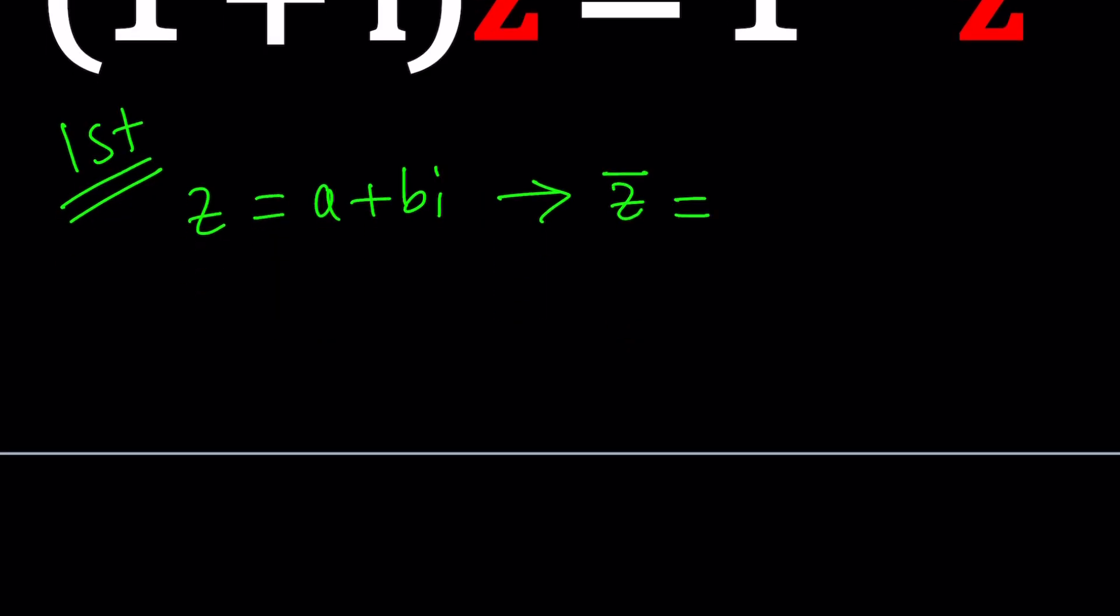So let's go ahead and see how this proceeds. If Z is A plus BI, how do you find Z bar or the conjugate of Z? You just negate or change the sign of the imaginary part, which is B. A and B are real numbers. Remember that.